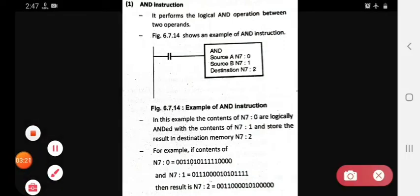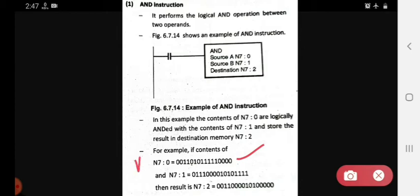What is the AND instruction? N7:0, we can consider it as A, and N7:1 we can consider it as B. Then N7:2, what should it be? A dot B. We can denote it as A dot B. This way you will consider the AND instruction.